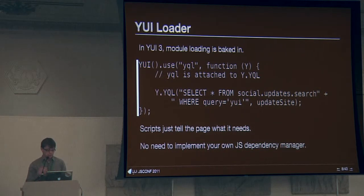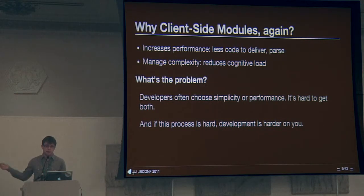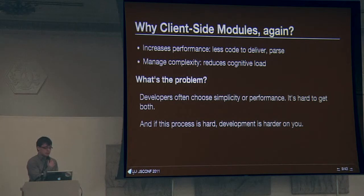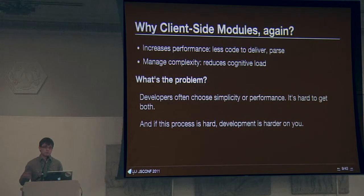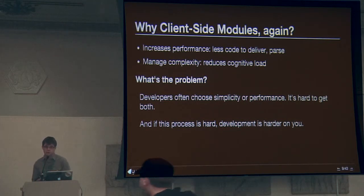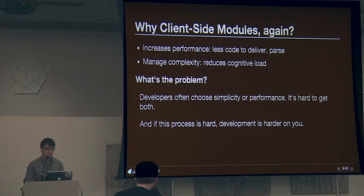We should have an API that's this simple, whether it's YUI or not, and it should also be performant. The reason why we use modules is because we're delivering less code — only what your users need. That increases performance because you're delivering less code. Even with a fast connection you still need to parse it, and that's especially significant on mobile. It also manages complexity, making things easier on you.